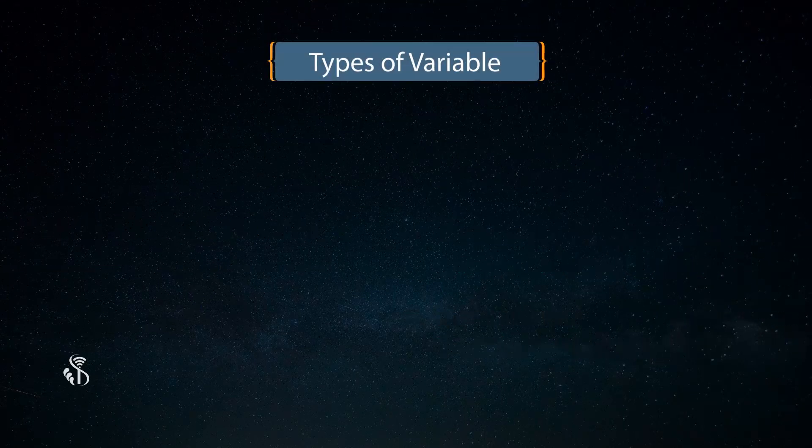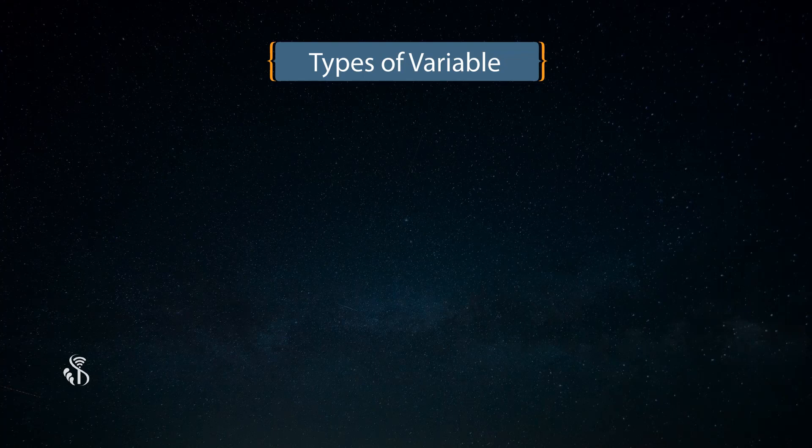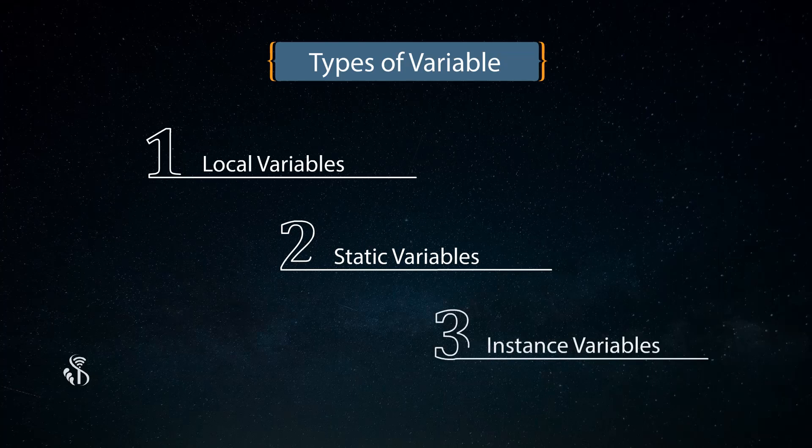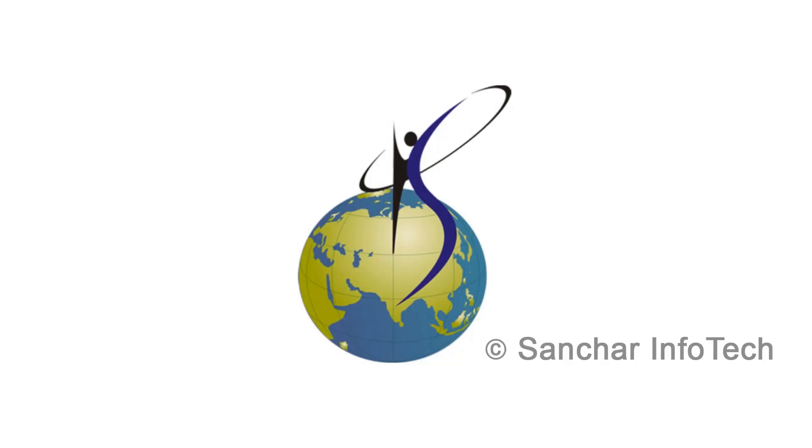There are three types of variables in Java programming: Local variables, static variables, and instance variables.